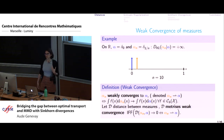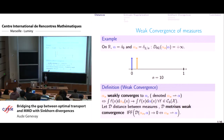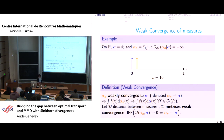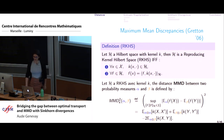Formally, the mathematical notion corresponding to this idea is metrizing weak convergence. If you take a sequence of probabilities alpha-n that weakly converges to alpha, you want a notion of distance under which convergence to zero is equivalent to weak convergence of the sequence of measures. This is the case, for instance, for maximum mean discrepancies (MMD), introduced by Arthur Gretton.